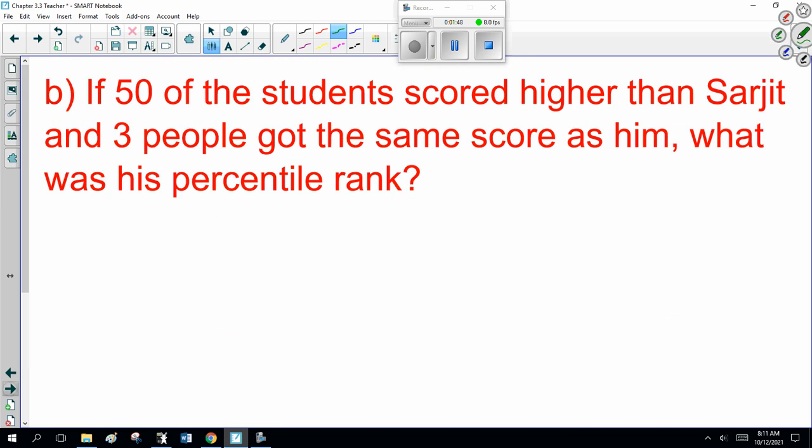Now, if 50 of the students scored higher than Sarjit, and three people got the same score as him, what was his percentile rank? Percentile rank equals B over N times 100. Now, how many people scored below? Well, 50 scored higher. So, 175 minus 50. And three people got the same. So, that's not below. So, that is 122 got below.